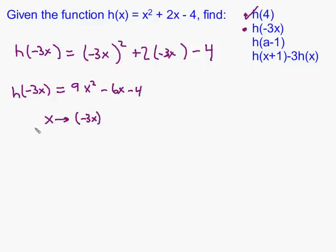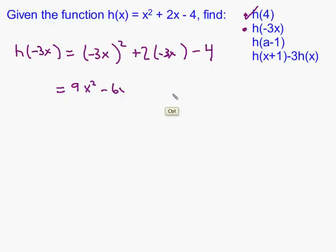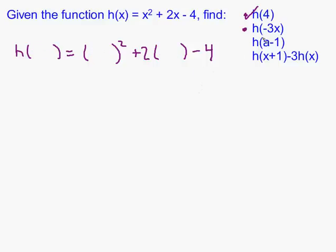Wherever you see x, replace it with parentheses negative 3x — and that's exactly what I'm going to do in the next part, except I'm going to replace it with a minus 1. So h of a minus 1 is going to be the same kind of problem. If I replace a minus 1 in the parentheses, I'd get h of a minus 1, and as before, I would write a minus 1 in all of the parentheses and simplify.